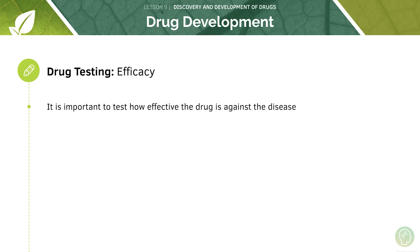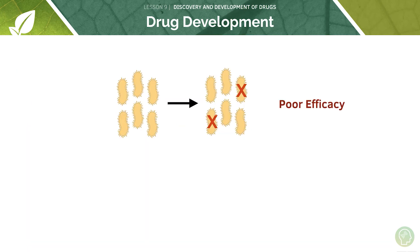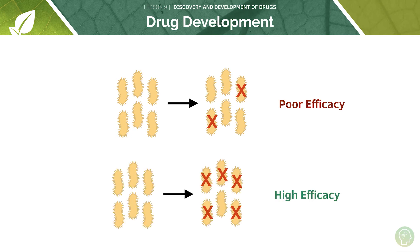Lastly, we've also got to take into consideration the efficacy of the drug — how effective the drug is against the disease. It needs to have a significant benefit in treating patients before it can be approved. A drug that only kills a smaller proportion of the bacterial population is said to have poor efficacy, but the higher its killing capacity, the higher the efficacy of the drug.